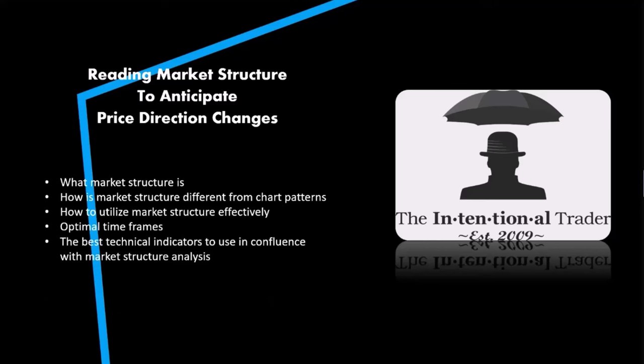We're going to talk about how to utilize market structure, the optimal time frame, and the best indicators for confluence of that information. We're looking for a confluence of all those things so we can have as much information as possible to understand what's likely to happen next. We're not looking for one indicator to do everything.